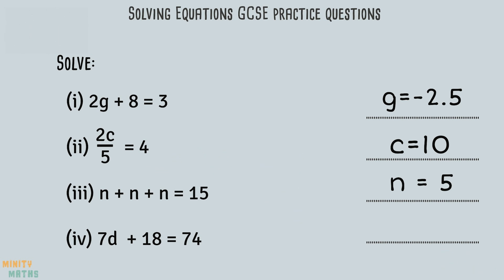Question 4 also requires us to make more than one step to get d on its own. Firstly, if we take away 18 from both sides, we can see what 7 lots of d equals. Now we can divide 56 by 7 to find out what d equals.